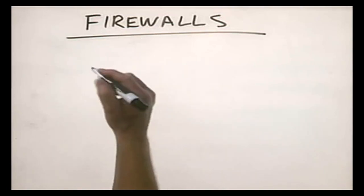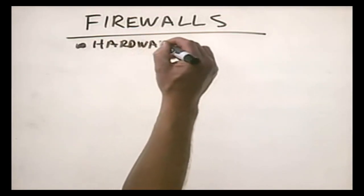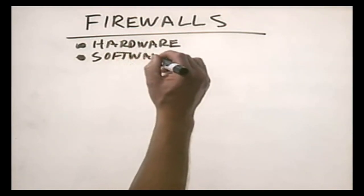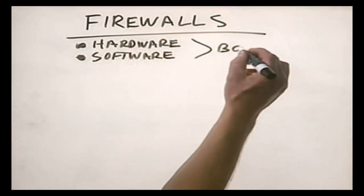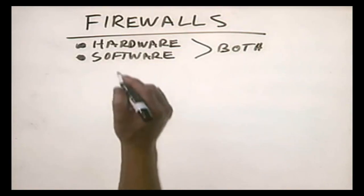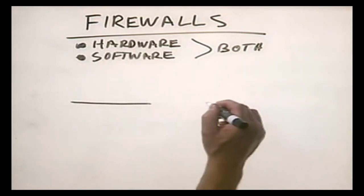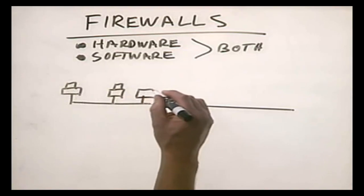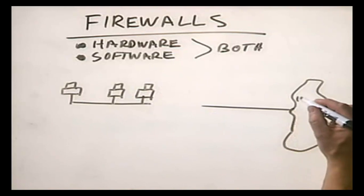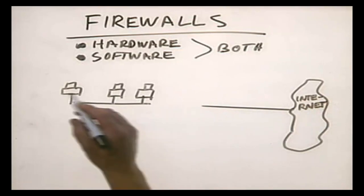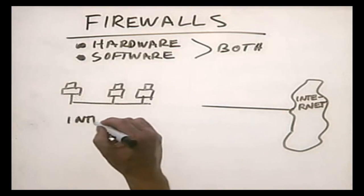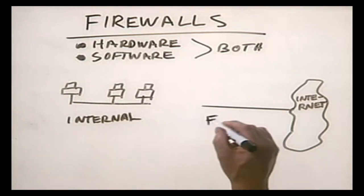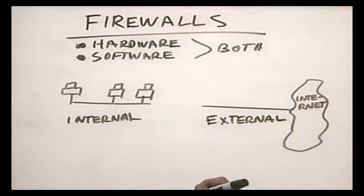Let's talk about what a firewall is and how it works. A firewall is either a piece of hardware or a piece of software, or a combination of both, depending on which type of firewall you're using and how you're implementing it. It sits between your network and a public network, such as the internet. We have our systems over here on our network, then we have the great cloud of the internet. We need a means of protecting our network — we'll label this internal — from this external network where chaos rules.